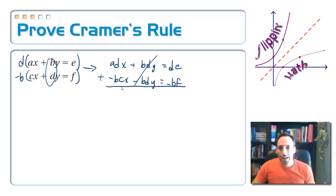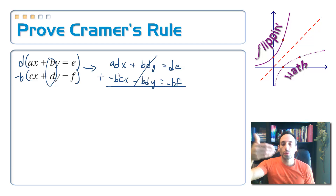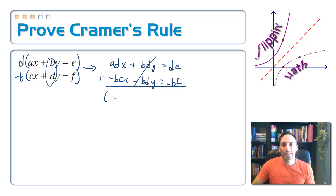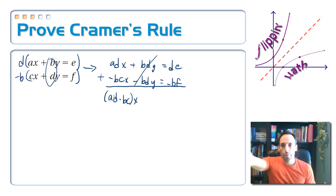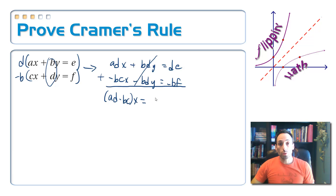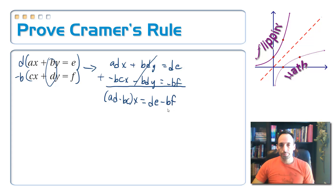Now I need to add up my x terms. If this were a number, say 5, and this one was 2, then 5 minus 2 equals 3 as the coefficient. Since these are variables, I write it in parentheses: ad minus bc times x. I take the first coefficient minus the second one — whatever that number is, that's the coefficient of x. This equals de minus bf.